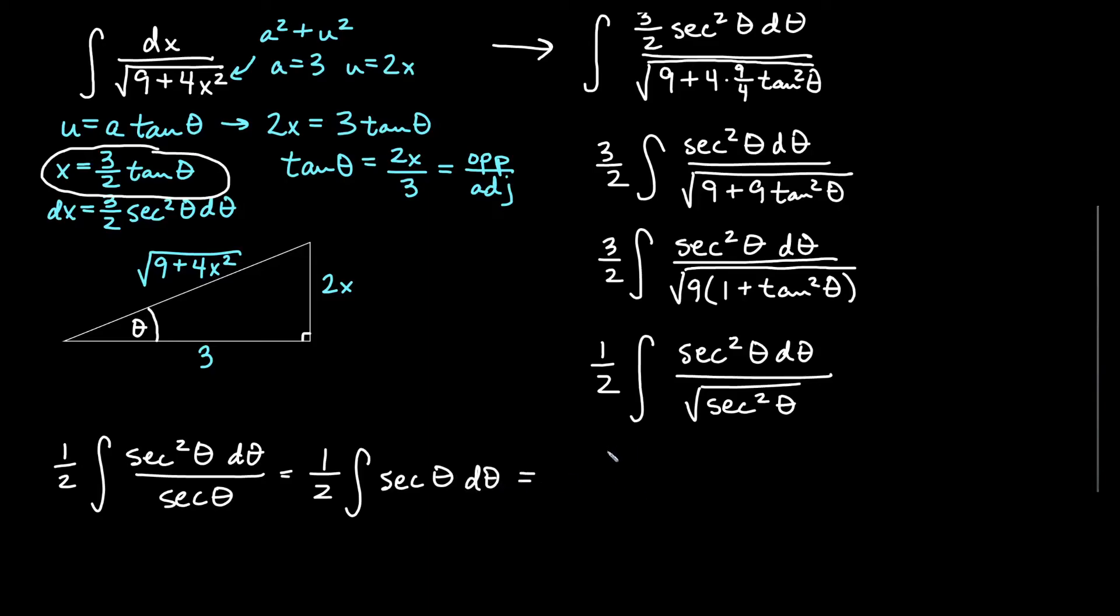Now, if you know the antiderivative of secant theta, you can just say 1 half ln of secant theta plus tan theta plus c. Then we'll need to go back and replace my tangent and secant terms.